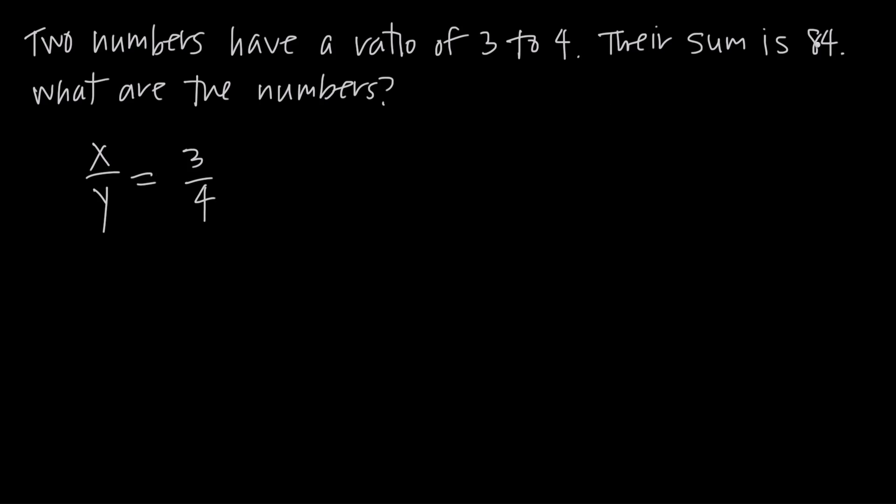We also know that the sum of the numbers is 84, so we can say that x plus y is equal to 84. Now we have two equations with two variables. So that's a system of linear equations and we can solve this as a system to find the values of x and y.